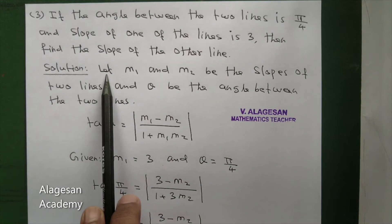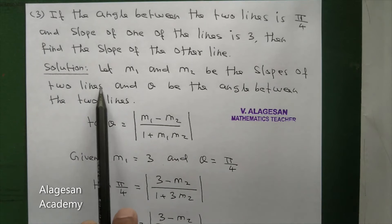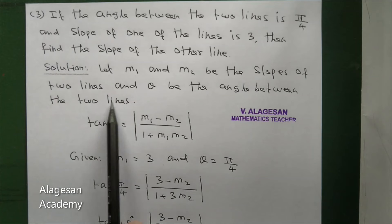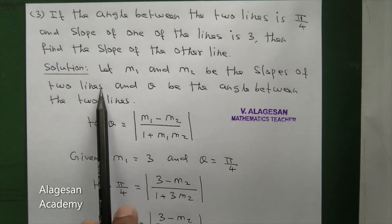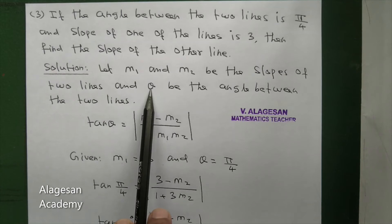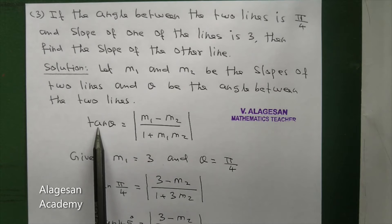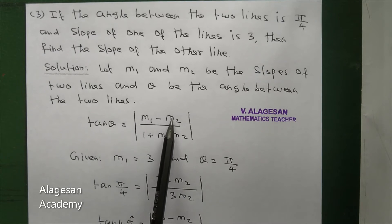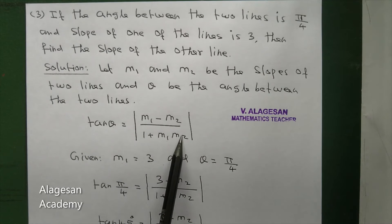Solution: Let M1 and M2 be the slopes of the two lines, and theta be the angle between the two lines. The formula is: tan theta equal to modulus of M1 minus M2 divided by 1 plus M1 into M2.